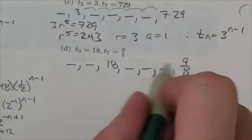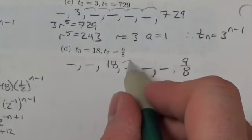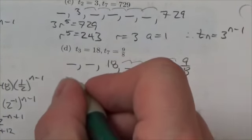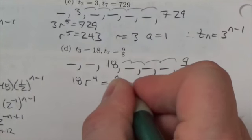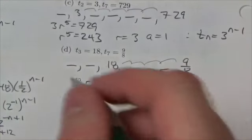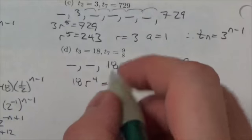To go from 18 to 9 eighths, I multiplied by our r value once, twice, three times, four times.